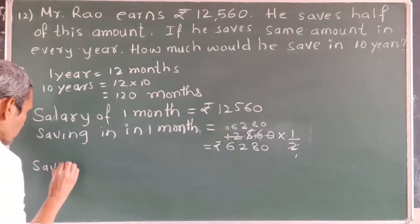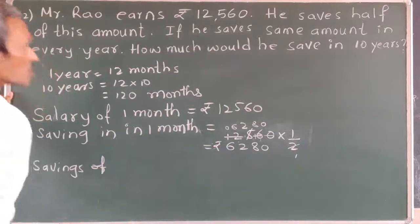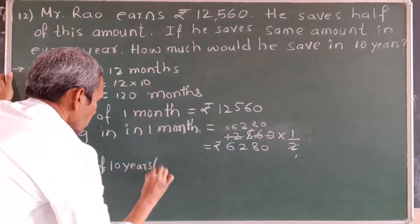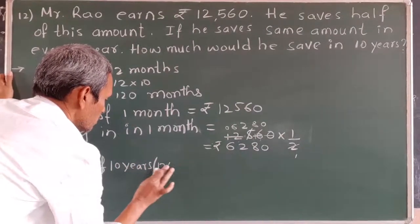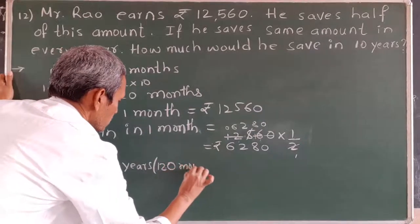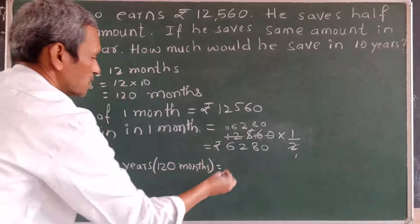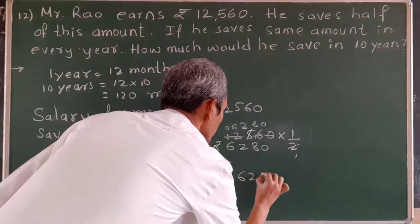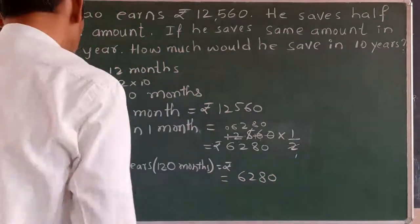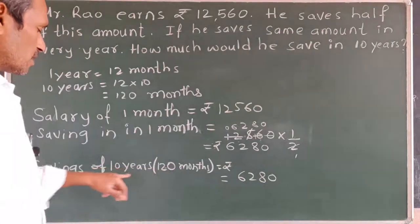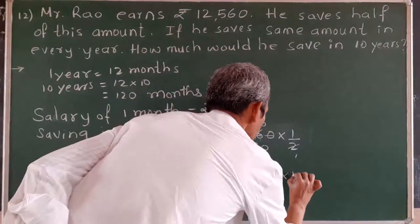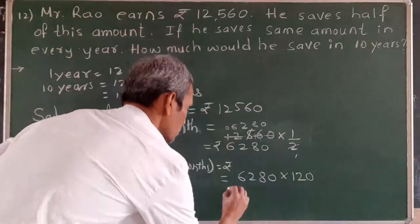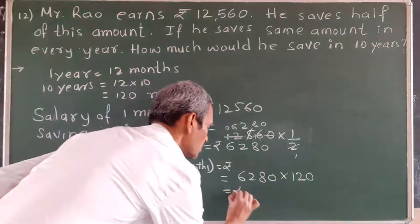Savings of 10 years — 10 years is 120 months. We will calculate: after multiplying 6,280 by 120 months, that is if he saves 6,280 in 1 month and there are 120 months in 10 years, if we multiply the saving of 1 month by 120 months, then we will get total savings in 10 years.